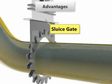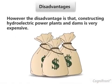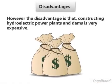Another advantage is that when electricity is not needed, the sluice gate is closed to stop the generation of electricity. This also allows storage of water to be used whenever necessary.